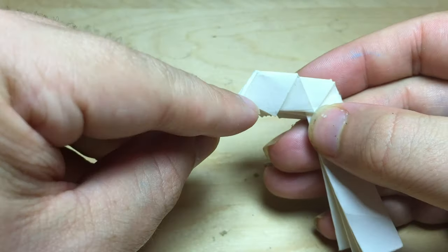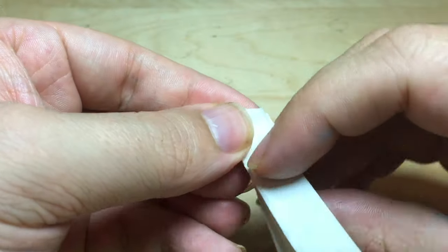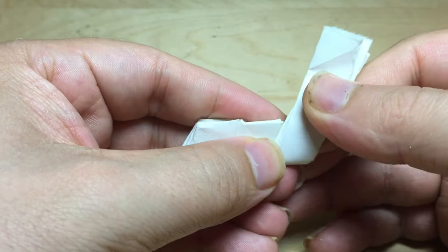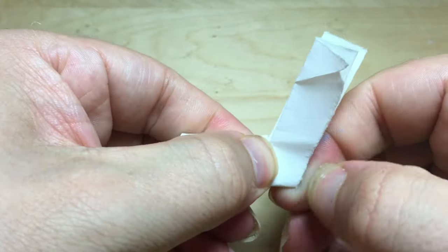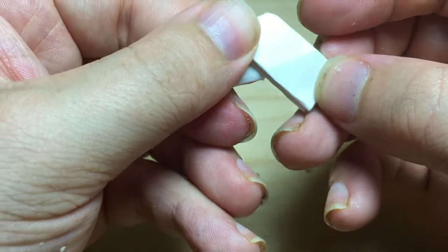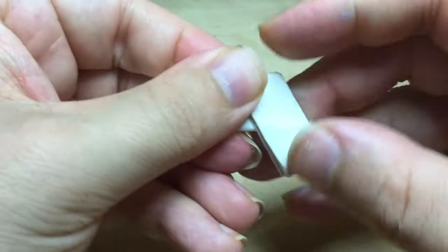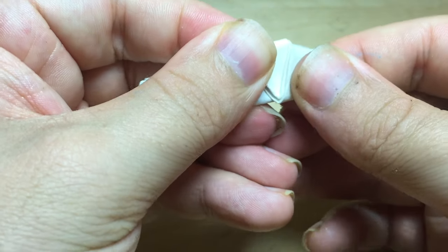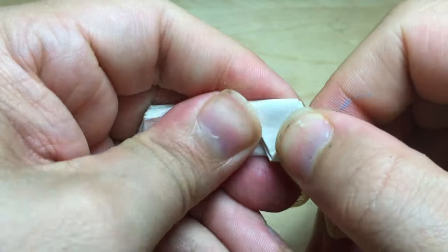So I want this progression to continue. So I'm going to re-crease here and re-crease there. Otherwise my creases look mostly proper.